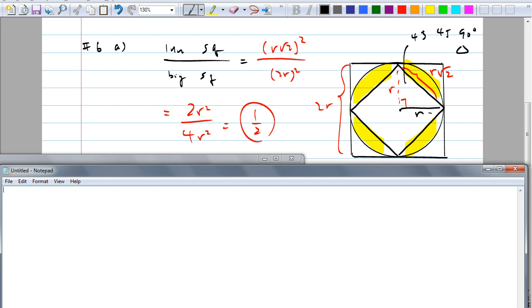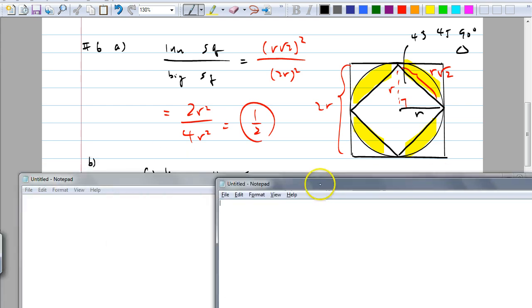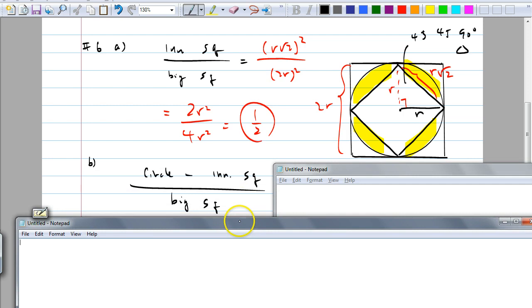Yeah, you could actually, you know, just look at this as one part, but, you know, why not just find the area of the circle and then minus the square? Because then, do we know the area of the circle then? What's the area of the circle, class? Pi. Yeah, so we know it's just simply circle minus the inner square over big square.